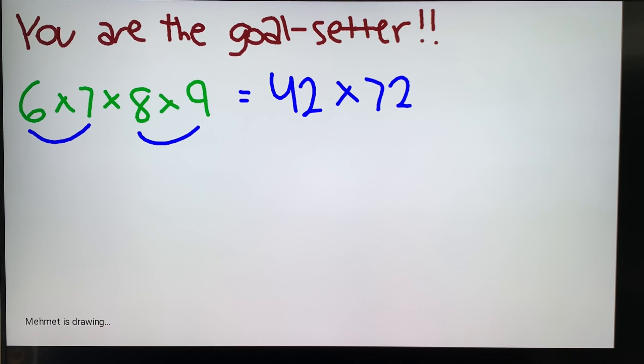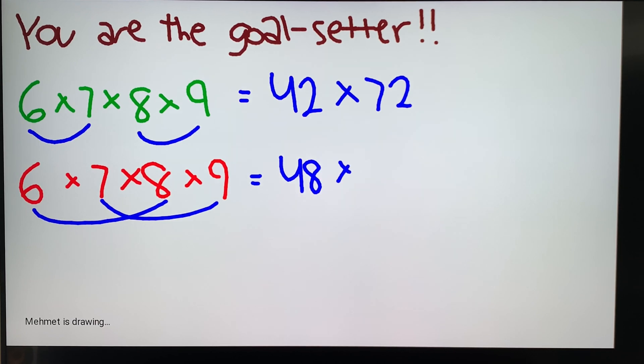You could also, let's say we did it again here, just redrafting out ways to make a goal. We could also pair off 6 and 8 and 7 and 9, and your goal here would be 48 times 63.